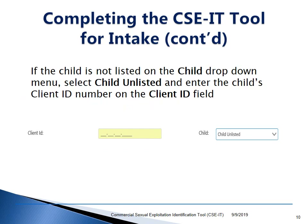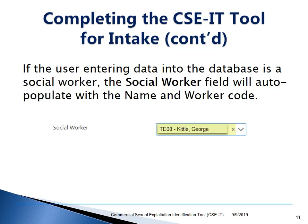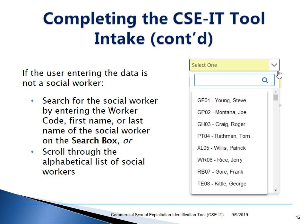Please note: if the child is not listed in the child drop-down menu, select Child Unlisted and enter the child's client ID number in the client ID field. If the user entering data into the database is a social worker, the social worker field will automatically populate with the name and worker code. If the user entering the data is not a social worker, search for the social worker by entering the worker code, first name, or last name in the search box, or scroll through the alphabetical list of social workers.